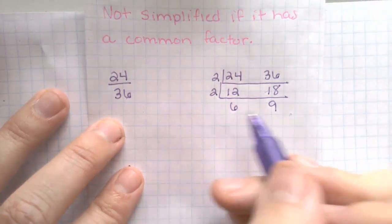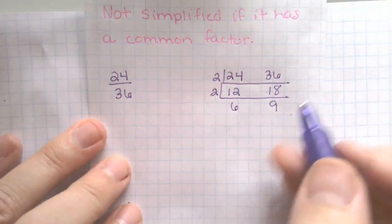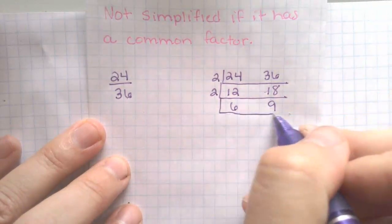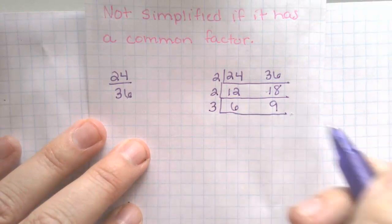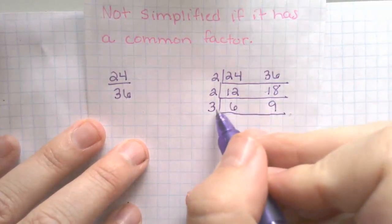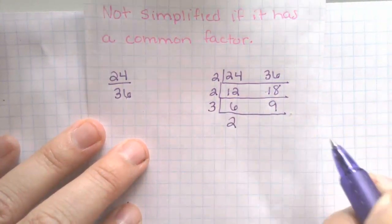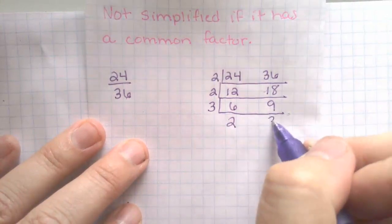And then we're going to look at 6 and 9. They still have a common factor. So we're going to go once again down. And I can pull out a 3. This is that common factor. 6 divided by 3 is 2. 9 divided by 3 is 3.